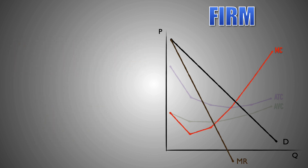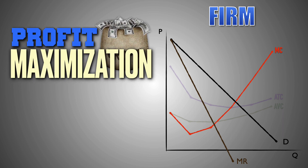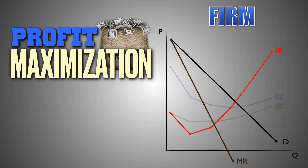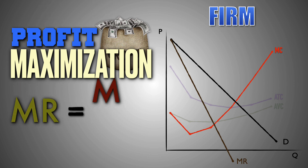Like all other firms, imperfectly competitive firms will produce a profit-maximizing level of output using the optimal output rule. According to this rule, a firm will maximize its profit by producing a quantity of output where the marginal revenue of the last unit produced is equal to its marginal cost. On the graph, this optimal level of output can be found where the marginal revenue curve intercepts the marginal cost curve. This is known as the profit-maximization point.